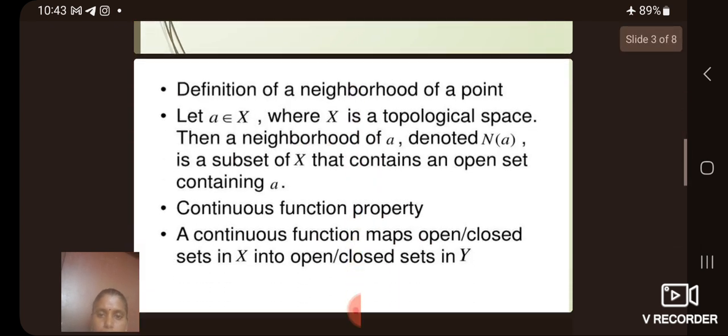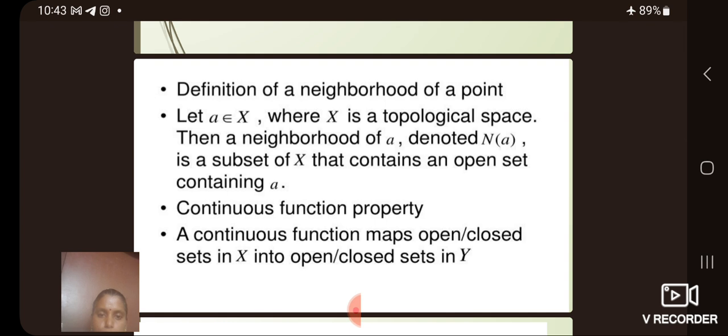Next, we see the definition of a neighborhood of a point. Let a belongs to x, where x is a topological space. Then a neighborhood of a, denoted N(a), is a subset of x that contains an open set containing a. A continuous function property is defined as: a continuous function maps open or closed sets in x into open or closed sets in y.